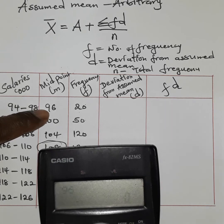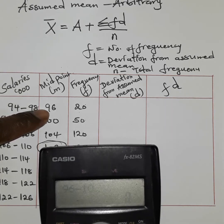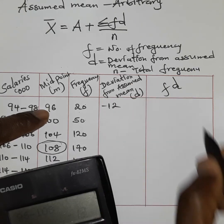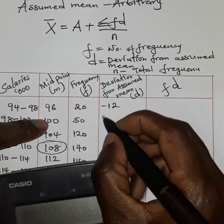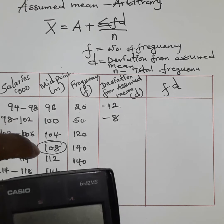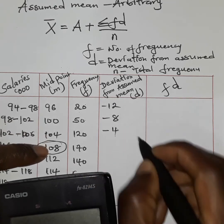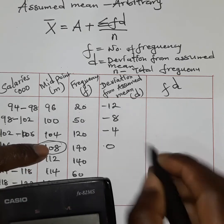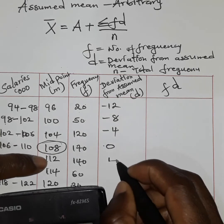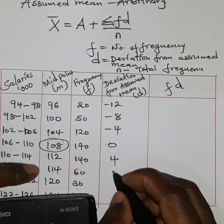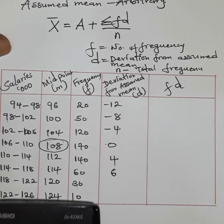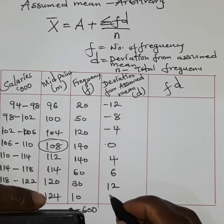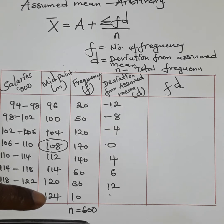To get the deviation d, we subtract the assumed mean from each midpoint. So: 96 − 108 = −12; 100 − 108 = −8; 104 − 108 = −4; 108 − 108 = 0; 112 − 108 = 4; 116 − 108 = 8; 120 − 108 = 12; and 124 − 108 = 16.